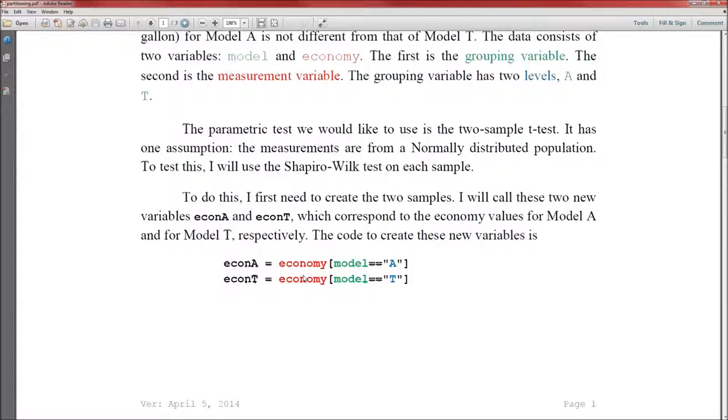Then economy, that's the measurement variable. Then a bracket. Then model, which is the grouping variable. Equal equal, that is indeed a double equal sign, no space between them. And then in quotation marks, the level of that grouping variable, level A in this case. And then a closing bracket. And again, the brackets are important.